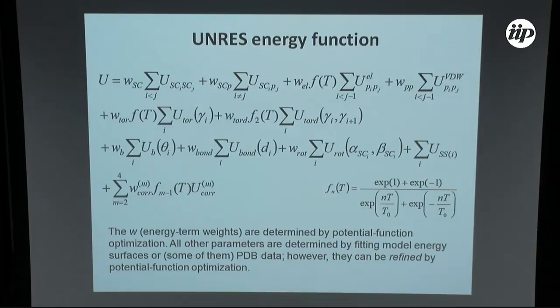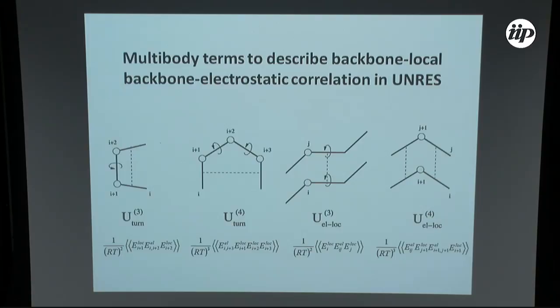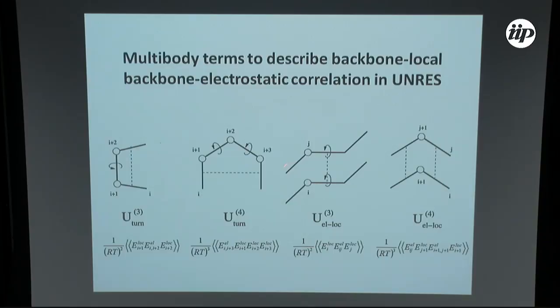The other thing which makes UNRES different is the correlation terms. From our perspective, multi-body terms are really necessary to describe correct protein structures. Here I present four multi-body terms describing backbone local and backbone electrostatic correlations. The simple one is a U-turn, which describes correlation along the chain for the torsional potential coupled to the interaction between peptide groups. We can have fourth-order terms or terms between different parts of the chain. Without these terms, we couldn't correctly reproduce the secondary structure of proteins.